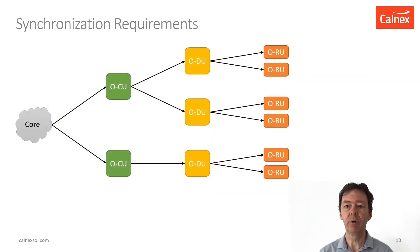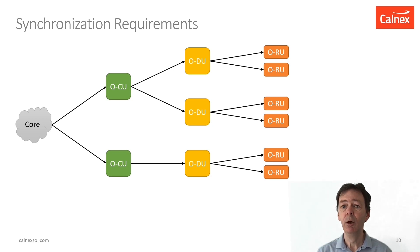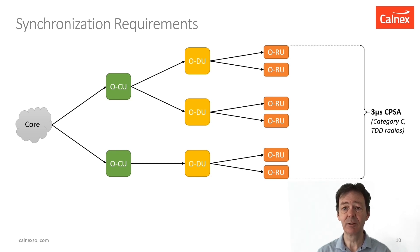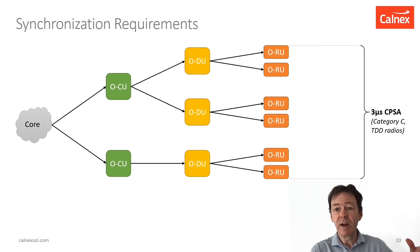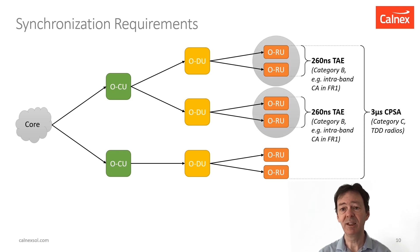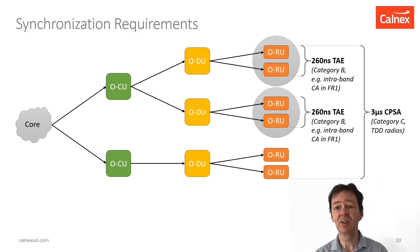What are the synchronisation requirements that apply between the different elements of a disaggregated base station? Well, firstly we have the radio requirements. Every radio unit within a TDD network has to meet what's called a 3 microsecond cell phase synchronisation accuracy in order to avoid interference within the network. But for radio units connected to the same distributed unit, in order to run some of the higher capacity radio protocols such as intra-band carrier aggregation, they might have to meet a 260 ns time alignment error.